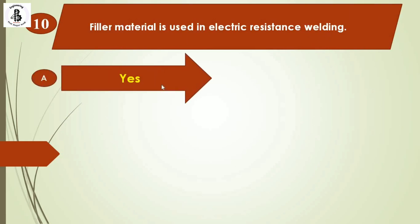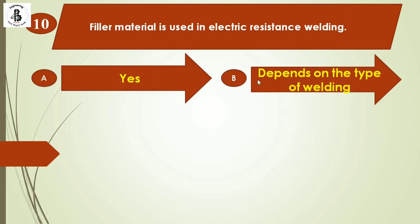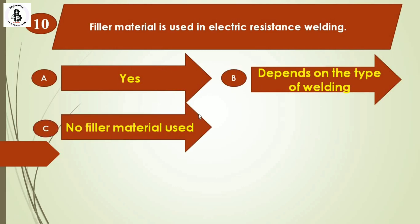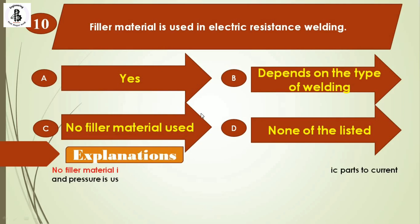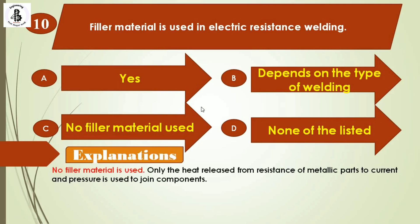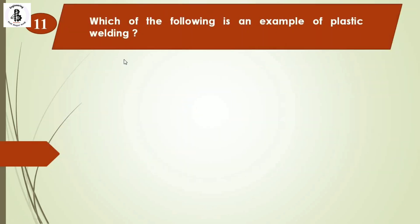Question 10: Is filler material used in electric resistance welding? Option A: yes, option B: depends on the type of welding, option C: no filler material is used, option D: none of the listed. In any resistance welding process, no filler material is used. Heat is released from the resistance of metallic parts to current, and pressure is applied to perform the joint. The right answer is option C.